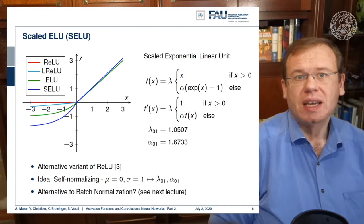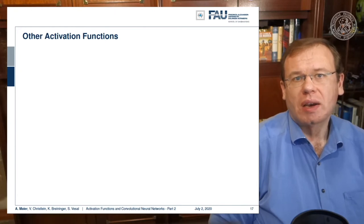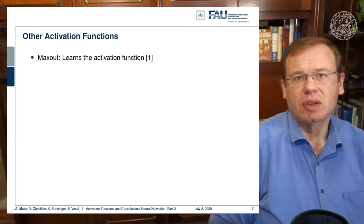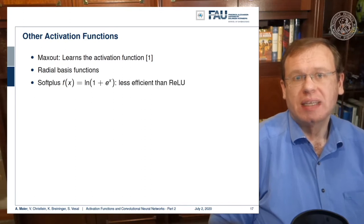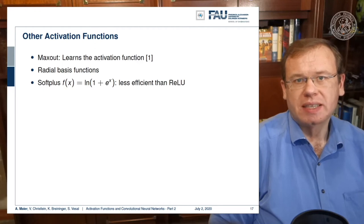Another thing that we can do about the internal covariate shift is batch normalization. This is something we'll talk about in a couple of videos. Okay, what are other activation functions here? There is max out that learns the activation function. There are radio basis functions that can be employed. There is also soft plus which is a logarithm of one plus e to the power of x that was found to be less efficient than the ReLU.